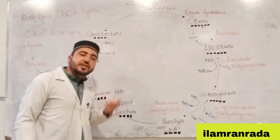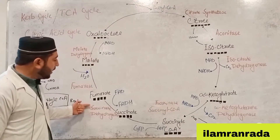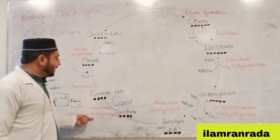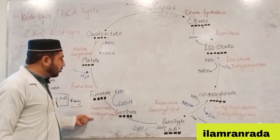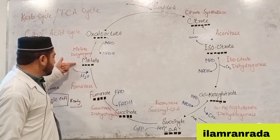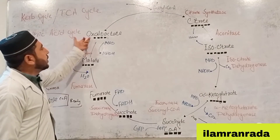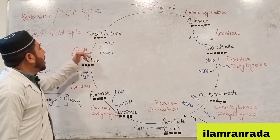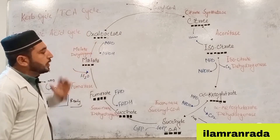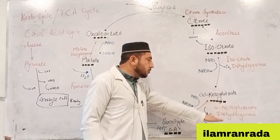The cycle continues: fumarate is converted to malate, and malate is oxidized to oxaloacetate (four carbons), producing NADH. The oxaloacetate is regenerated to begin the cycle again. Students, NADH is produced at this final step as well.